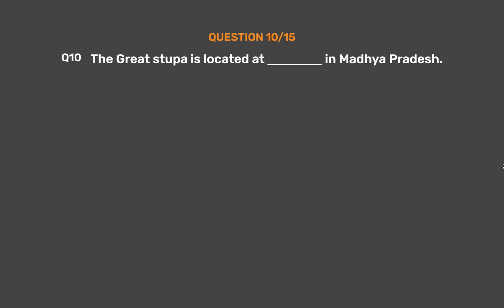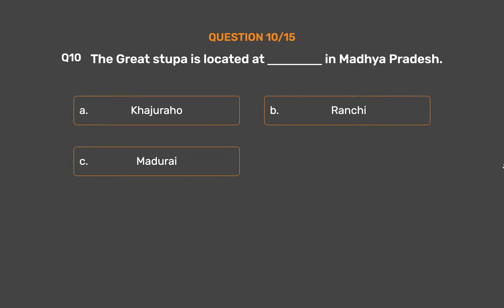Question No. 10. The great stupa is located in Madhya Pradesh. Option A: Khajuraho. Option B: Ranchi. Option C: Madurai. Option D: Sanchi.